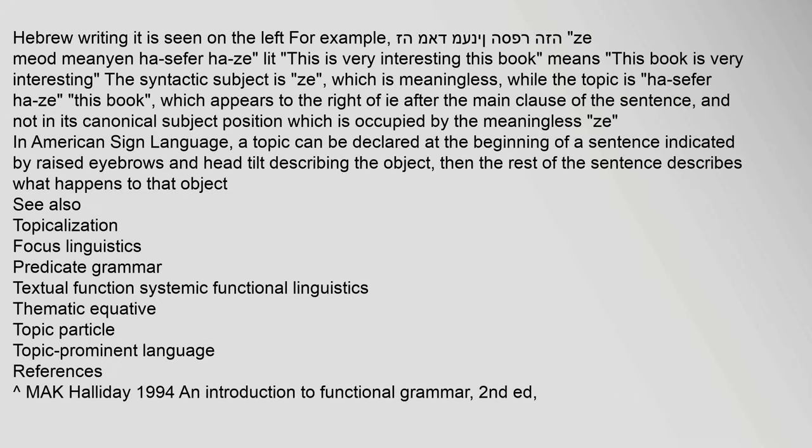Hebrew: As seen in the writing on the left, for example: 'ZHMD MNN SHPR, ZMIAD MEANYON HAH SIFER HAH ZE' — meaning 'This book is very interesting.' The syntactic subject is a meaningless form, while the topic is 'this book', which appears to the right of — i.e., after — the main clause of the sentence, and not in its canonical subject position, which is occupied by the meaningless element.